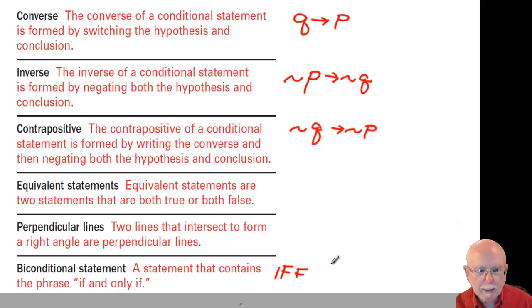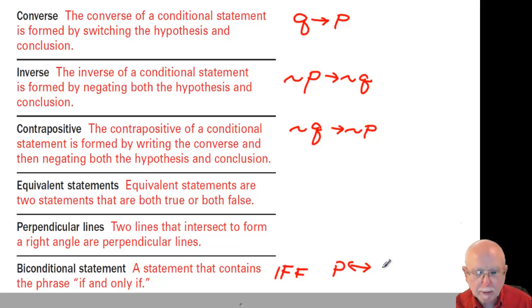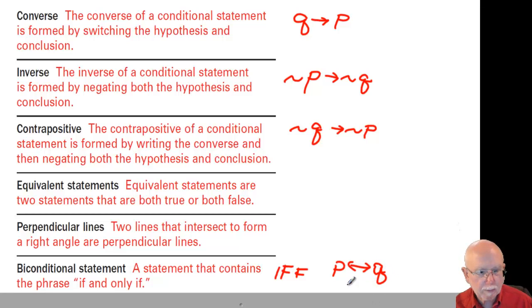And the biconditional is written with the double-ended arrow, meaning it goes both directions: P if and only if Q.